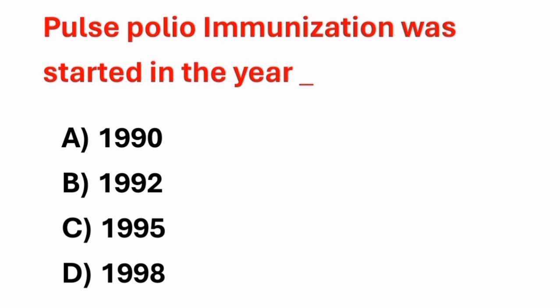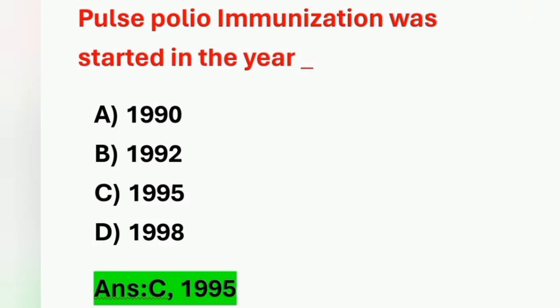First question: Pulse polio immunization was started in the year. Options: A) 1990, B) 1992, C) 1995, D) 1998. When was pulse polio immunization started? The correct answer is 1995. Option C is the correct answer.